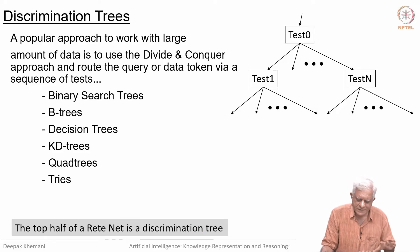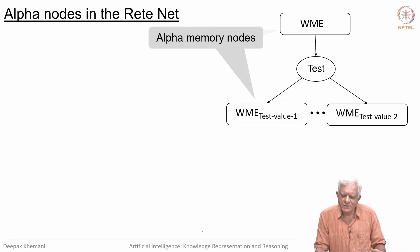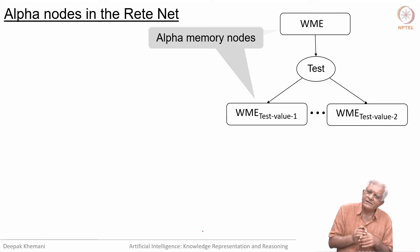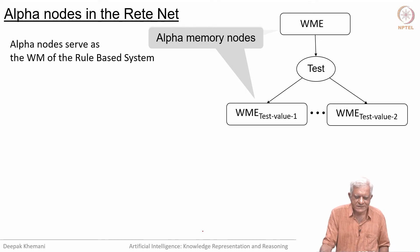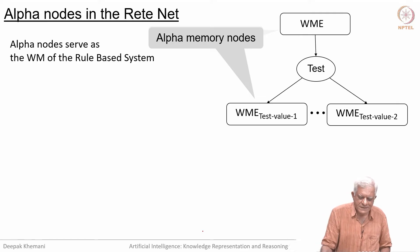The top half of the RETE net is going to be a discrimination tree, made up of what are called alpha nodes. You take a working memory element, put it into the network, and it traverses down a certain path based on the different tests that it satisfies, and it will be stored in nodes called alpha nodes. These are part of the discrimination structure, and alpha nodes serve as a working memory of the rule-based system.